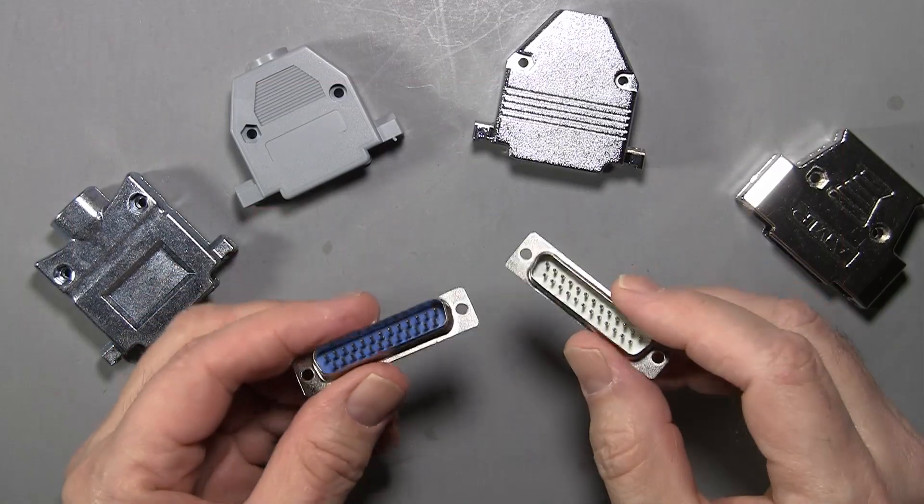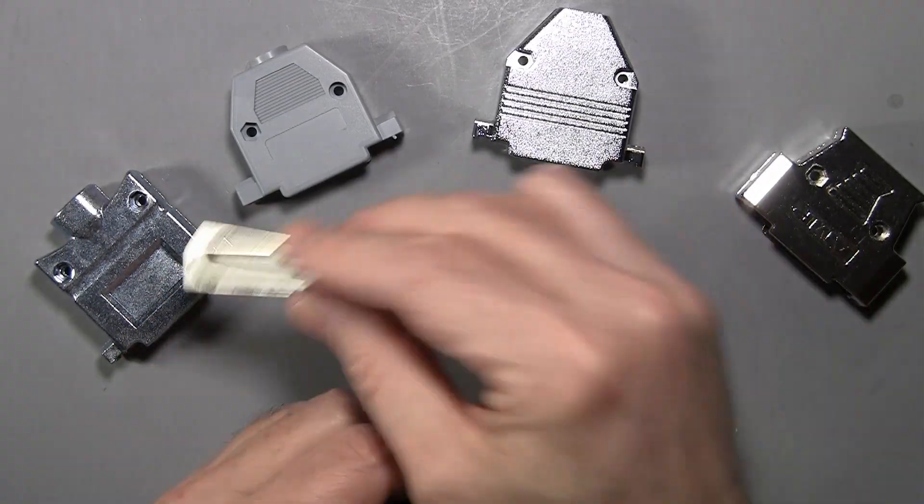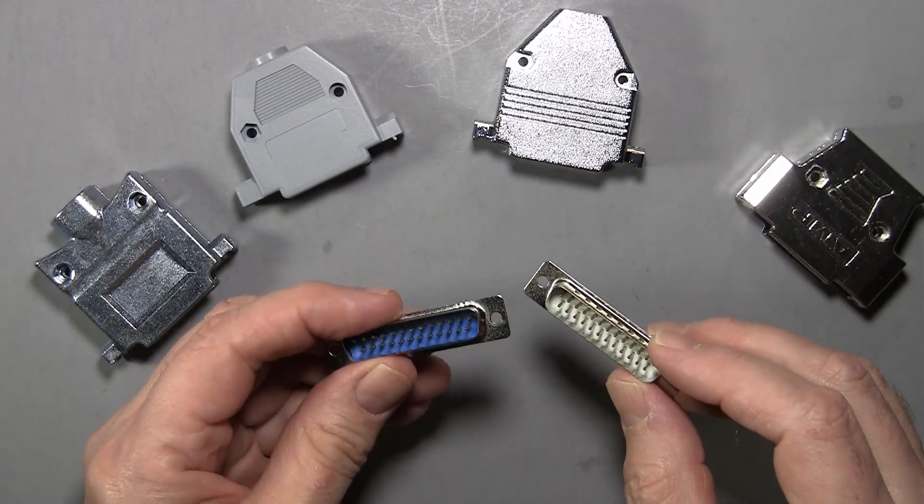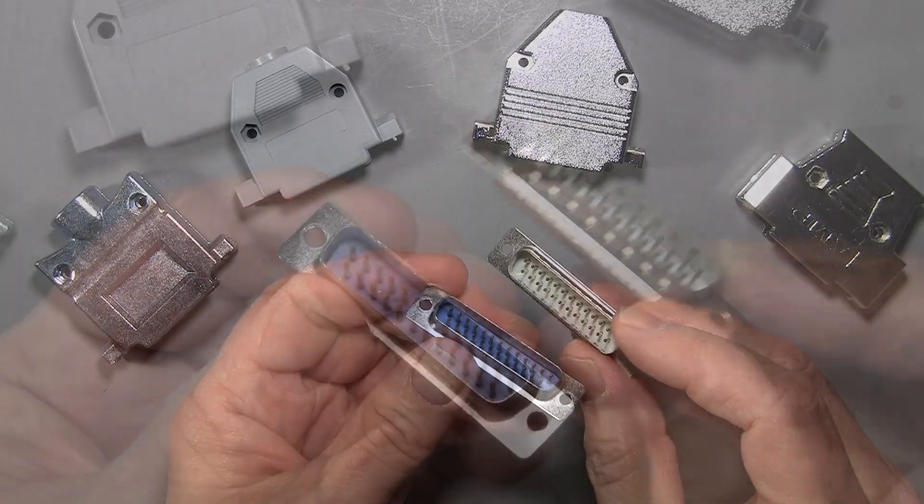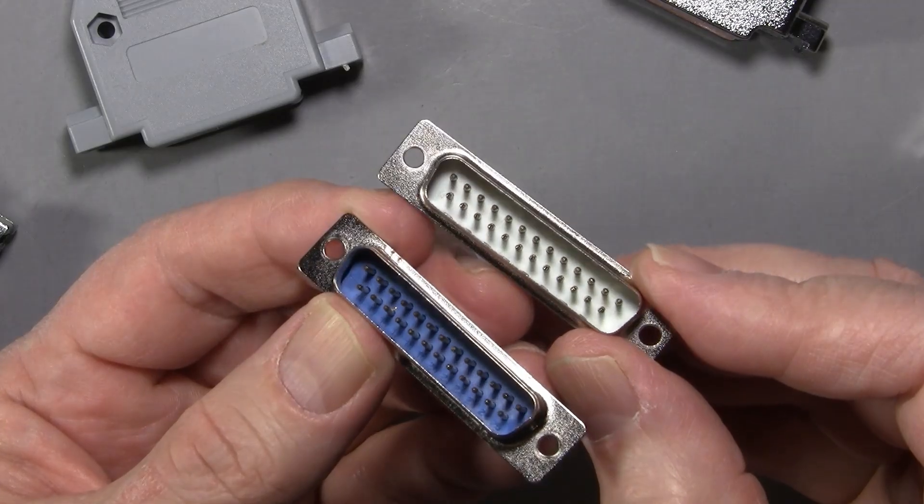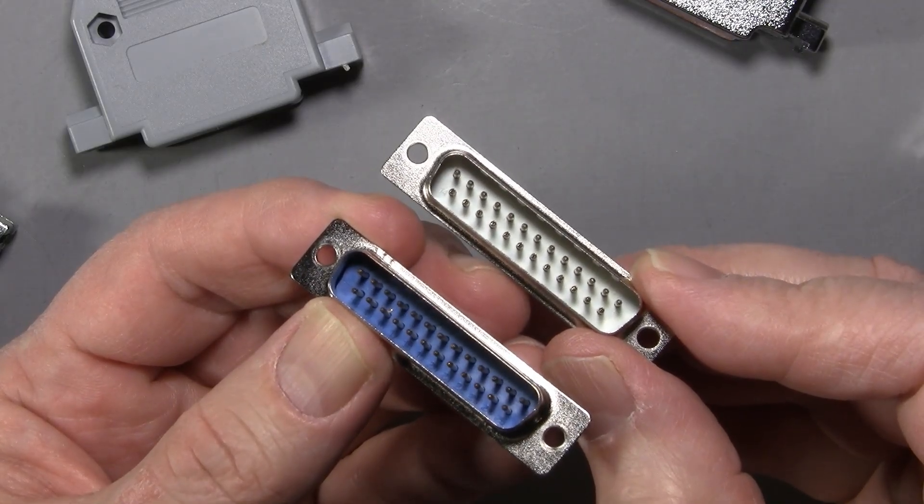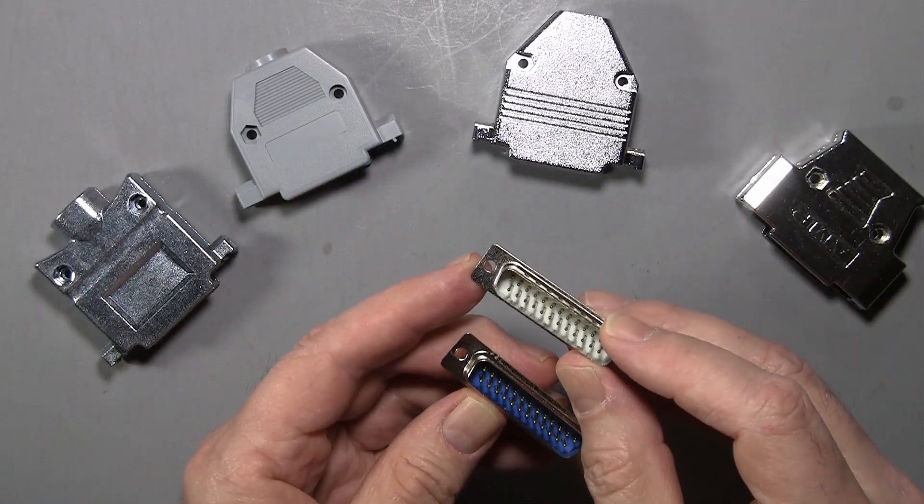When choosing DB25 connectors, sometimes the connector is sold with the shells and sometimes separately. Both these connectors I'm showing you here are gold-plated. The blue one has pins made out of stamped metal, but the white one has pins made out of solid metal. That's a better connector.